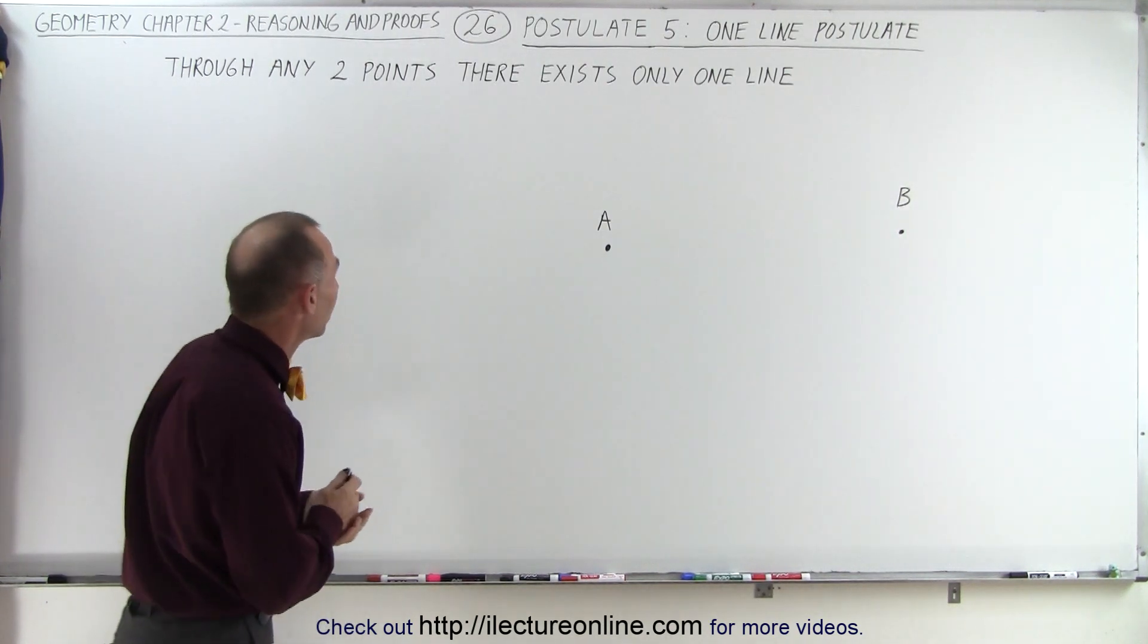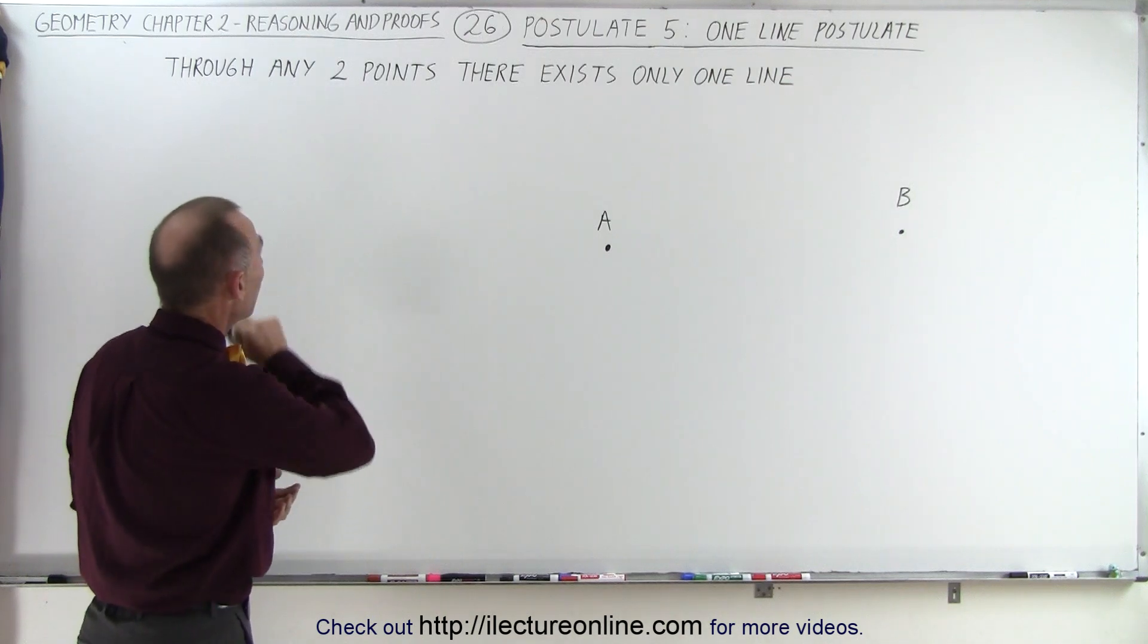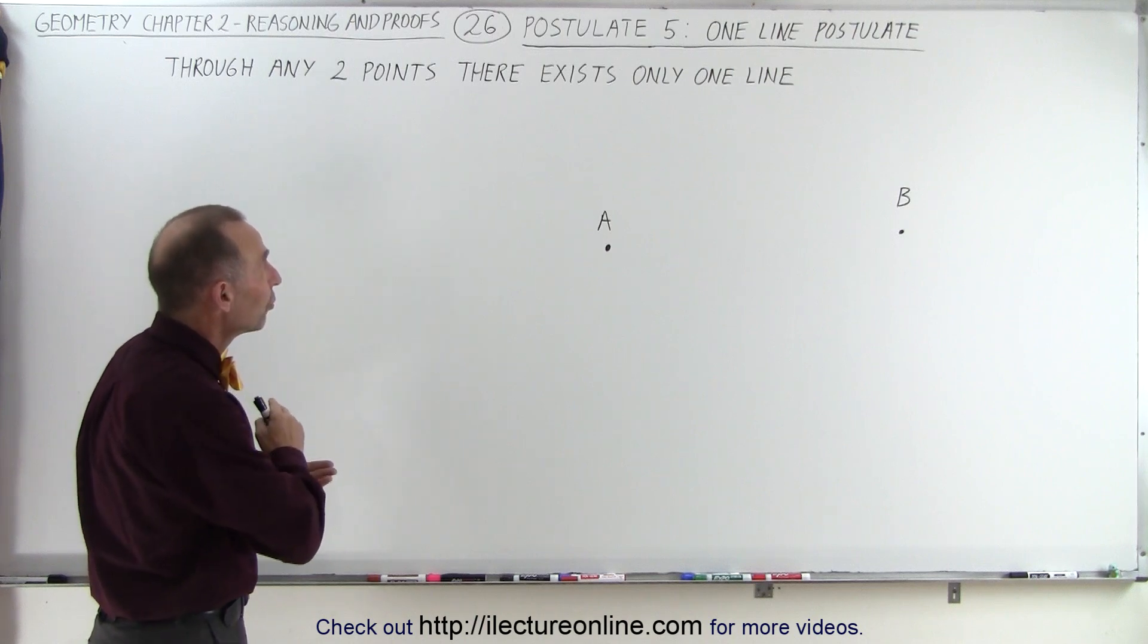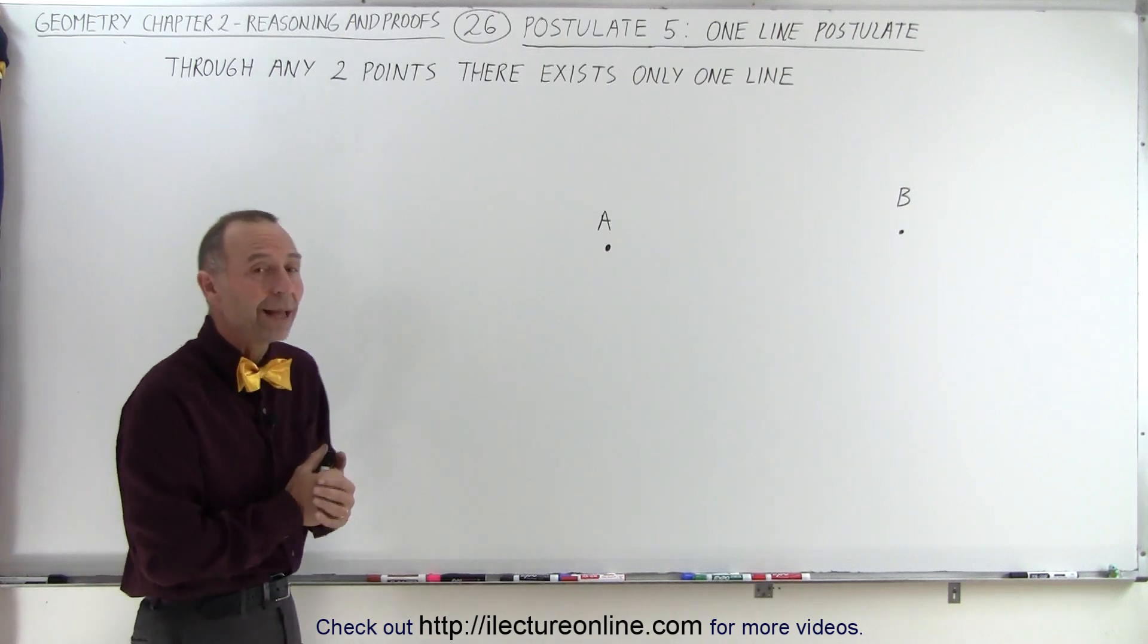What it means is the following. Let's say we have two points. Therefore we can make the statement that through any two points there exists only one line.